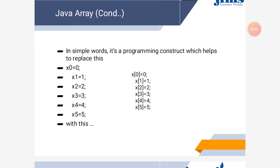In this slide, we can see there are six values which we want to store: x0, x1, x2, x3, x4, x5 are different variables and we are storing different values. In an array, we define an array named x and by just varying the index, we can store different values.